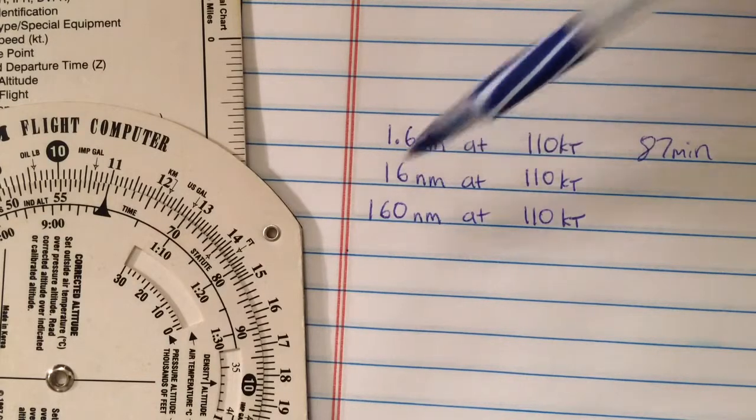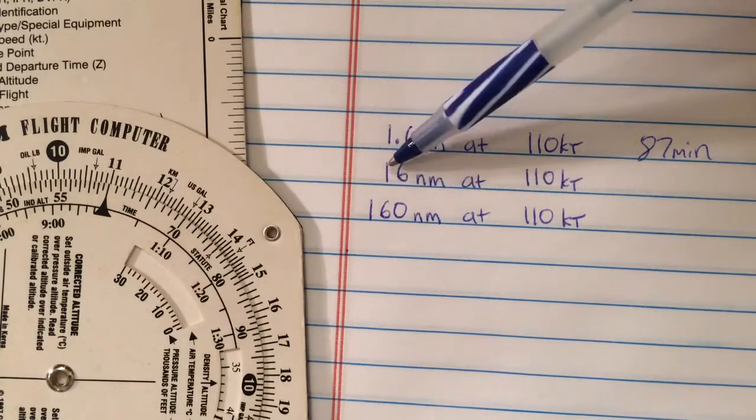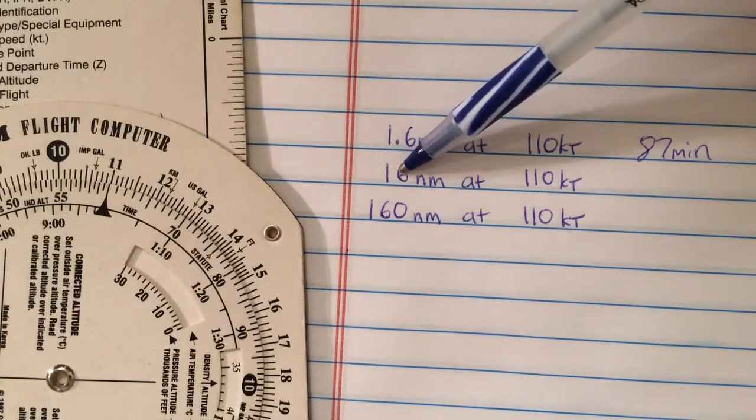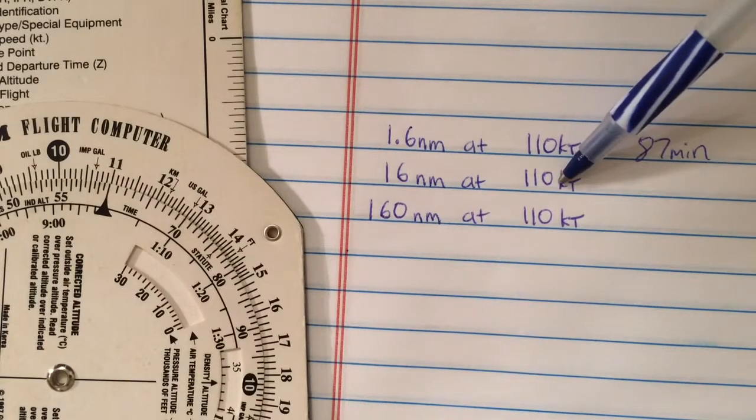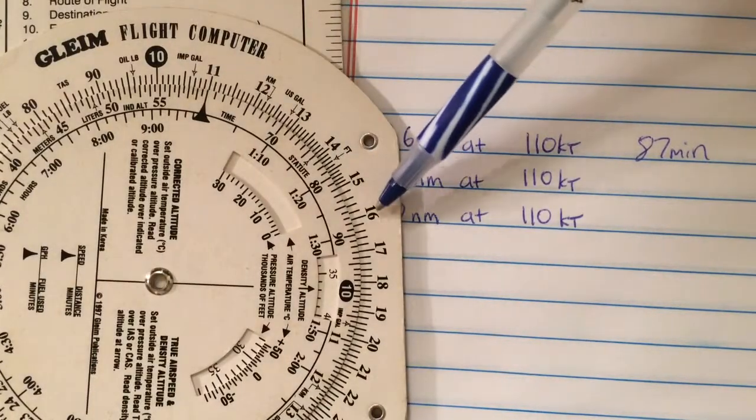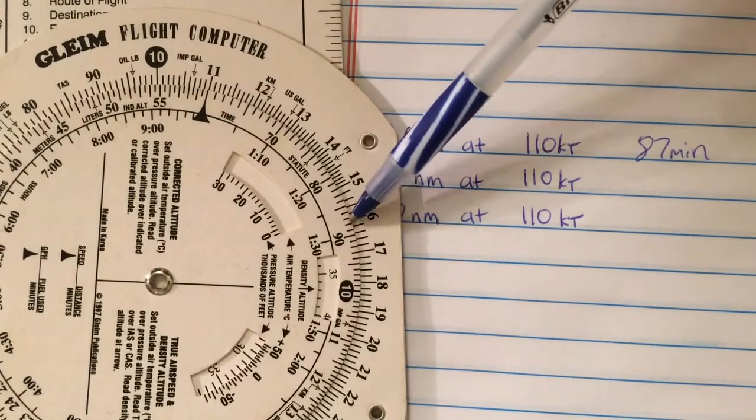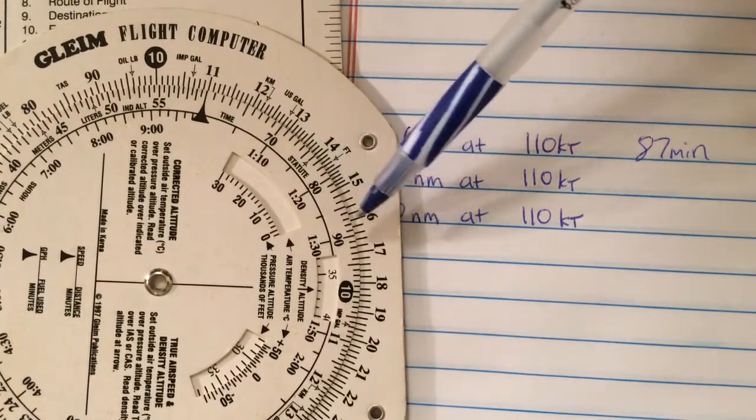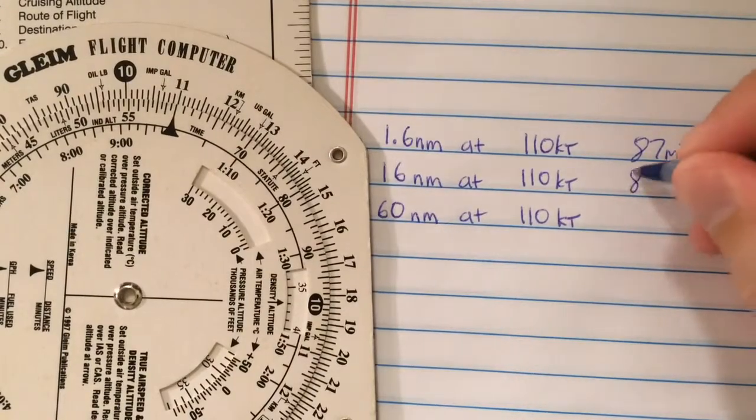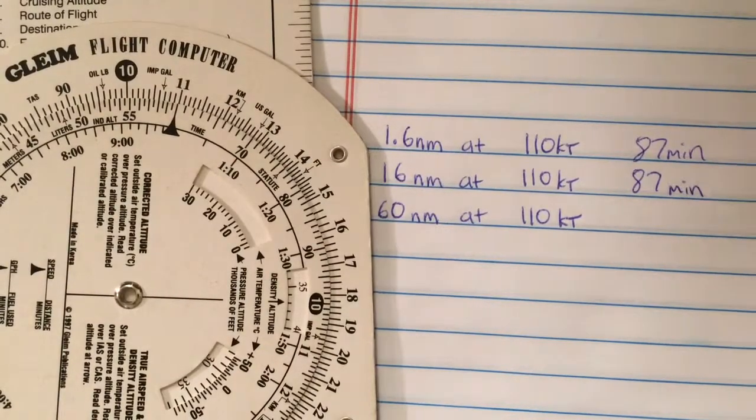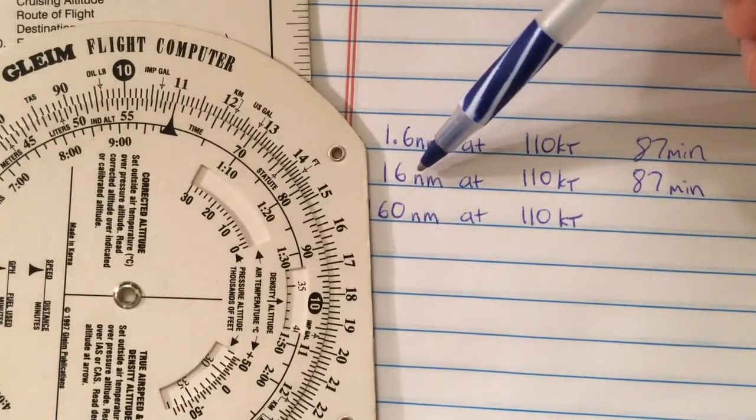Let's continue and do another problem. It'll make more sense after we do it. Say I'm going 16 nautical miles now. I already have my speed set, so I'm going to use the same numbers except without the decimal point in the middle. I'm reading the same number on the inner scale, 87. Is it going to take me 87 minutes to go 16 nautical miles? No.